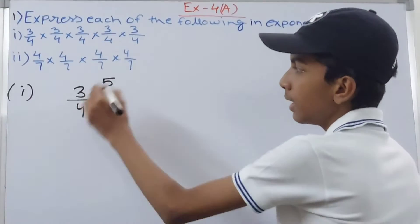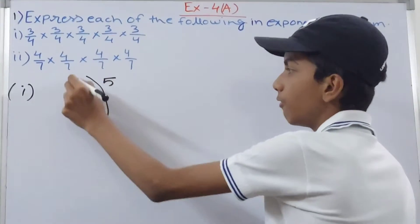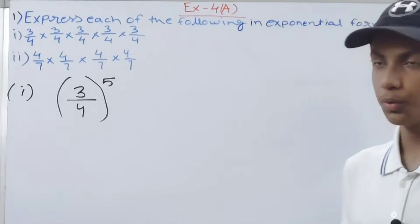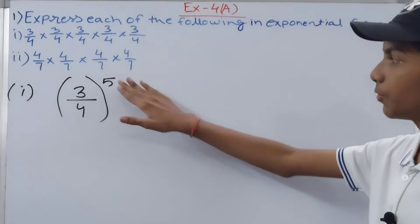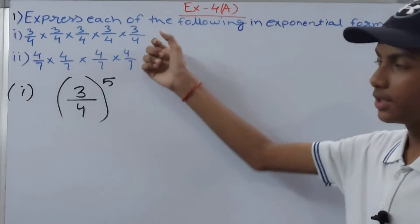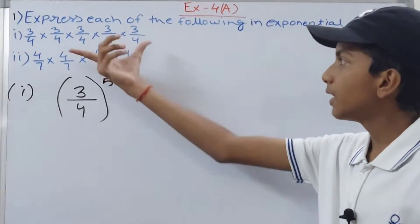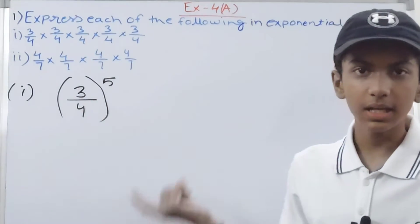Above it you can write 5, but remember for fractions we always put the fractions in brackets and then outside of it we write the exponent. So 3 upon 4 to the power 5. This is the exponential form when you combine this - when we combine all of this up and write it with the base and the exponent.